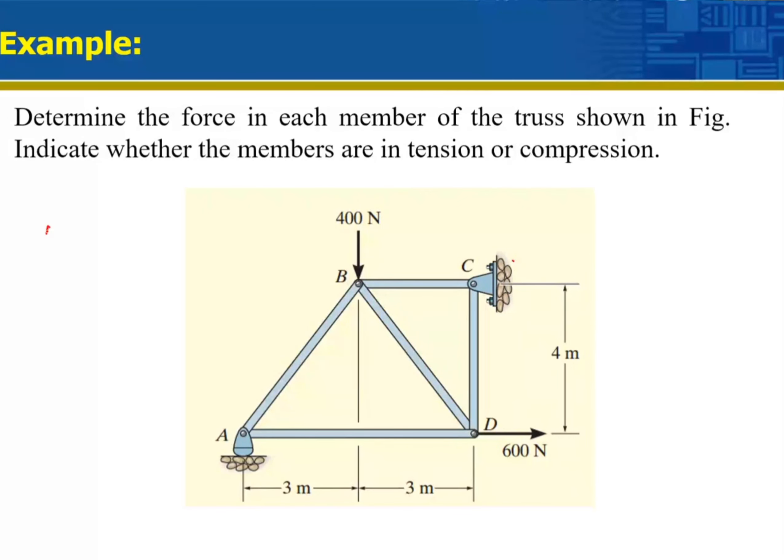You need a joint where you've got one known and two unknowns maximum. So where shall I start? C? At C, we've got two reaction forces. D? Okay. At D, I've got one known and I've got one, two, three unknowns. That's not the right place.